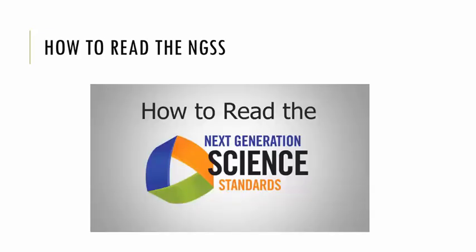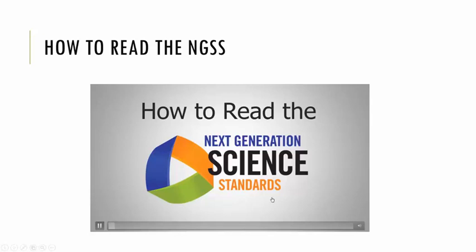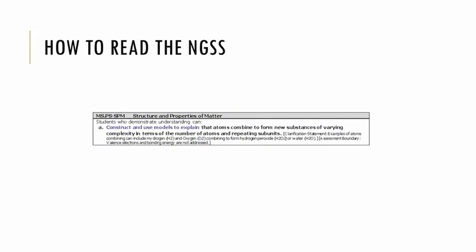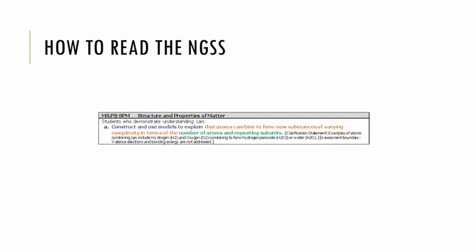This video will outline how to properly read the performance expectation statement and how to read the three foundation boxes. When reading the Next Generation Science Standards, it is first important to understand how they are laid out. The standards have been developed as student performance expectations. These statements each incorporate a practice, a disciplinary core idea, and a cross-cutting concept. Together, these three dimensions describe what all students meeting the standards will be held accountable for.